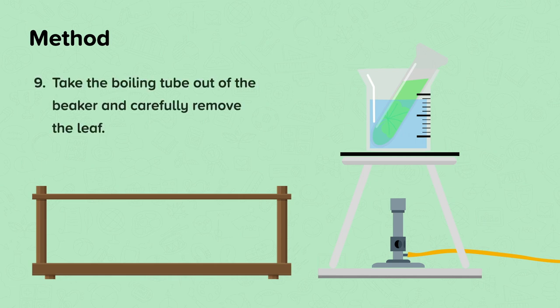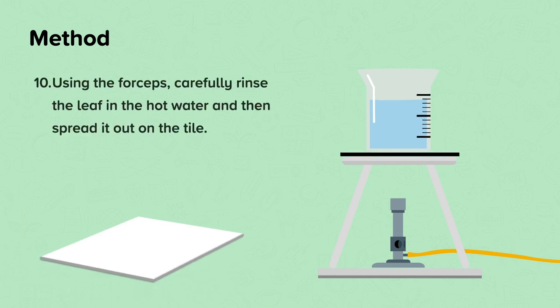Step nine, take the boiling tube out of the beaker and carefully remove the leaf. Using the forceps, carefully rinse the leaf in the hot water and then spread it out on the tile.